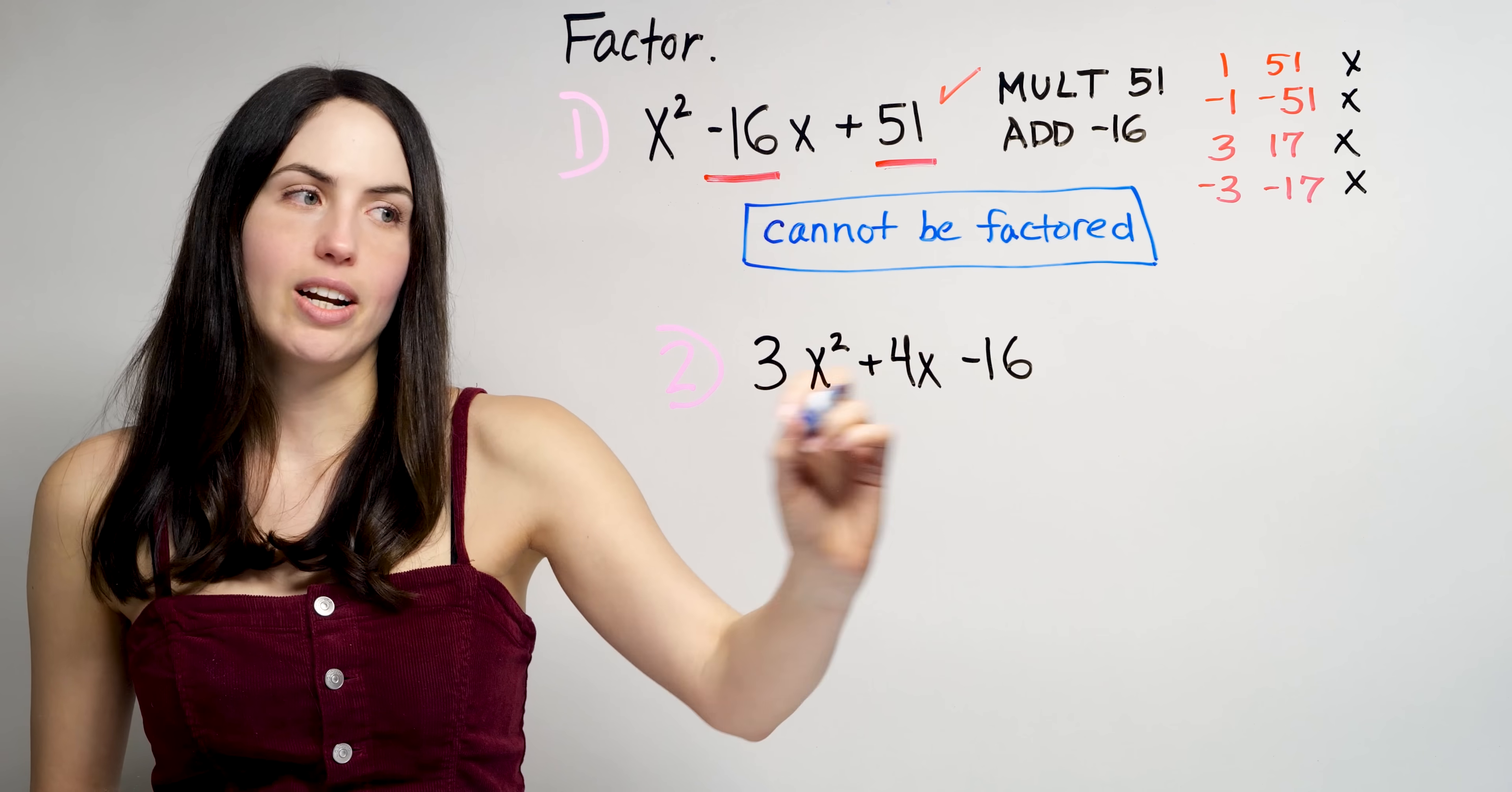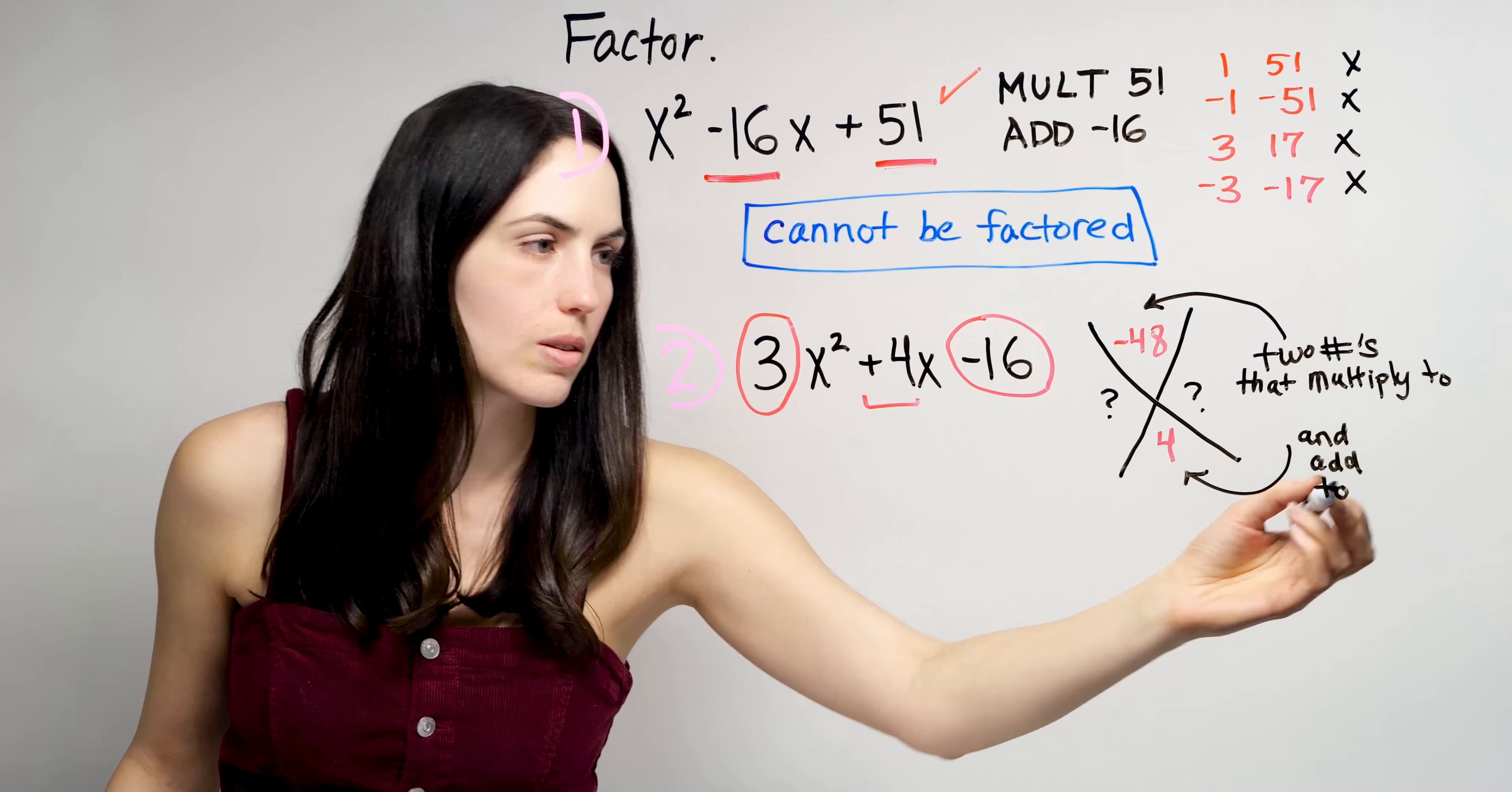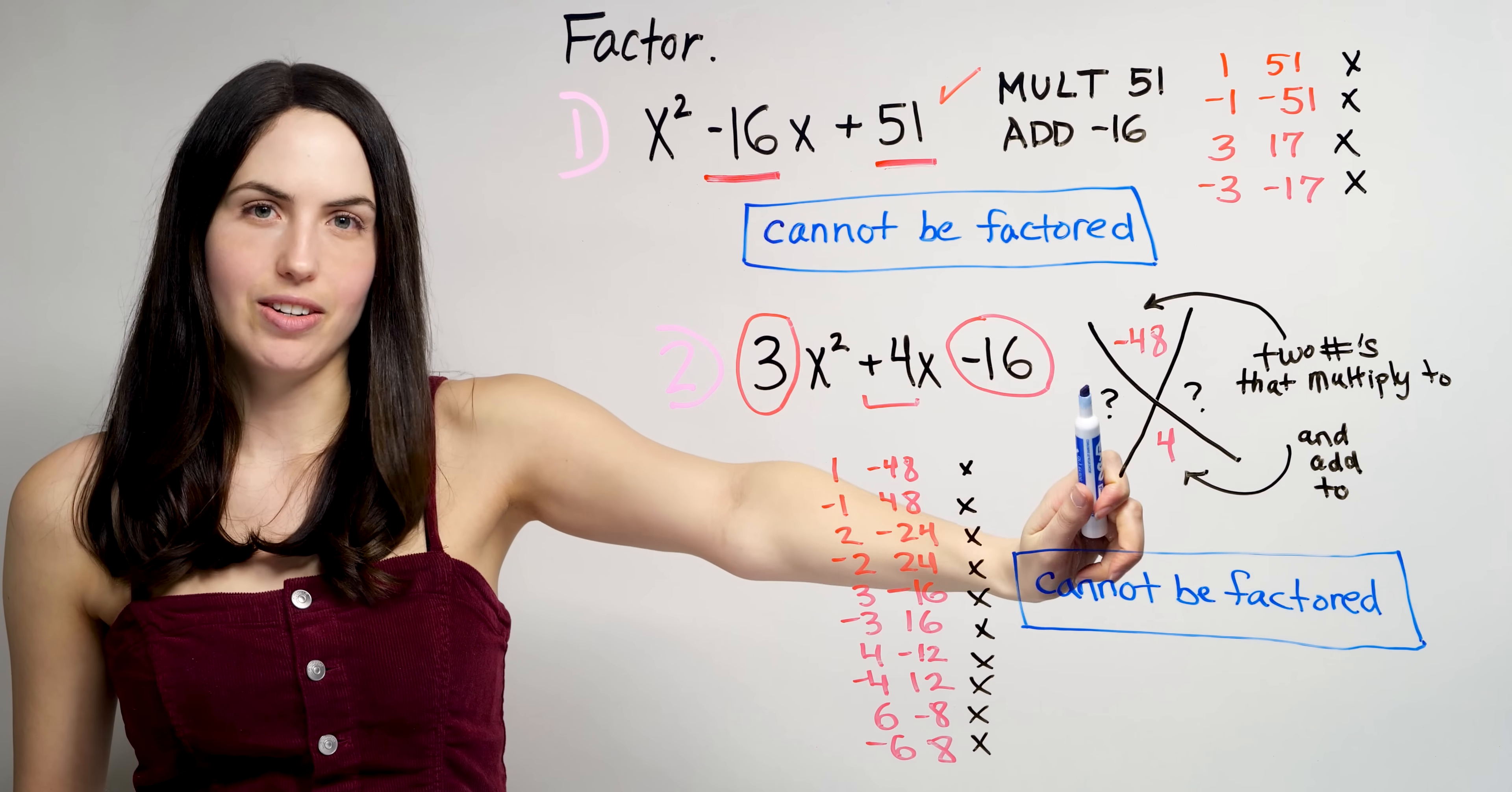What about for a quadratic expression that has a larger leading coefficient term, like 2x squared, 3x squared? Can the magic x be used to factor any quadratic expression?